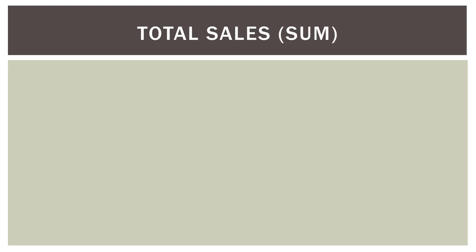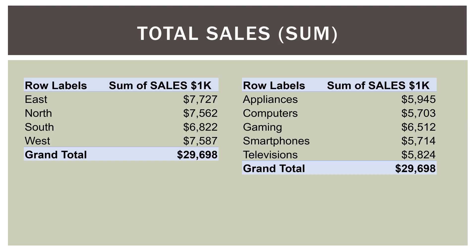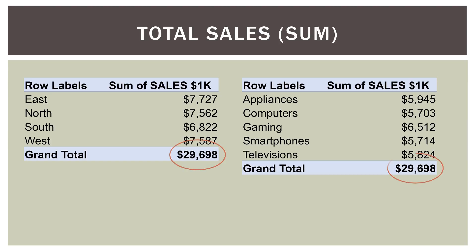Before getting into cross tabs, let's look at things on a single dimension. The east region had total sales of about $7.7 million, the north about $7.6 million, and so on. Overall, this company had about $29.7 million in sales. On the right, broken down by segment, appliances sold about $6 million, computers about $5.7 million, and so forth. The grand total for sales is the same in both tables — we're just dividing it up by region or by segment.